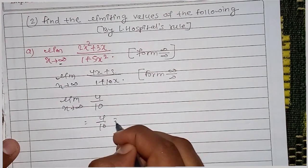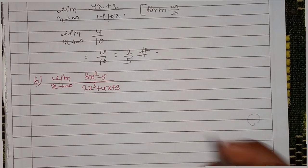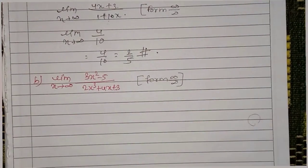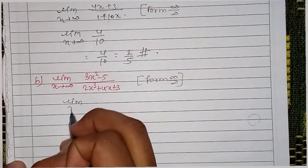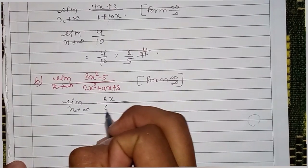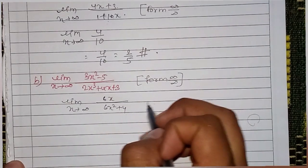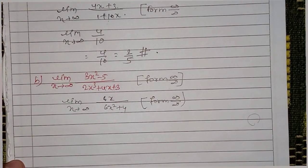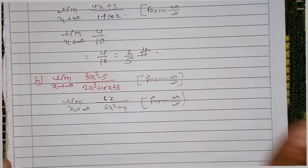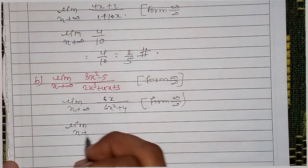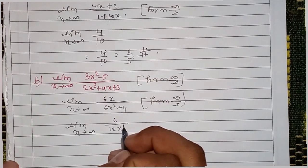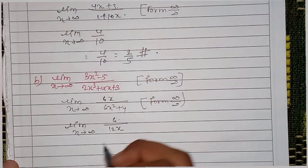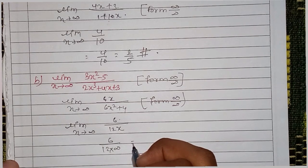So 4 by 10, which equals 2 by 5. 2 by 5 is the answer. The next question: limit x tends to infinity — 1st question is infinite by infinity — derivative x tends to infinity, 6x divided by 6x square plus 4. This is the derivative of x, so 6 into infinity — infinity by infinity. So derivative gives 6 by 12 into infinity — which goes to 0.